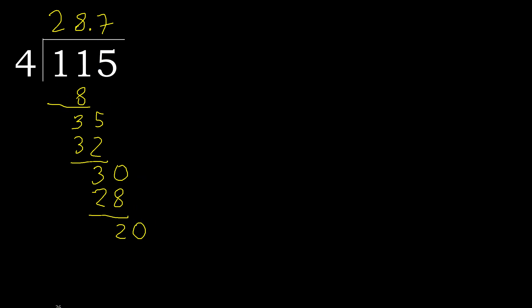4 multiplied by 5 is 20, which is not greater. 20 minus 20 is 0. Remainder is 0, therefore we are finished. The answer is 28.75.